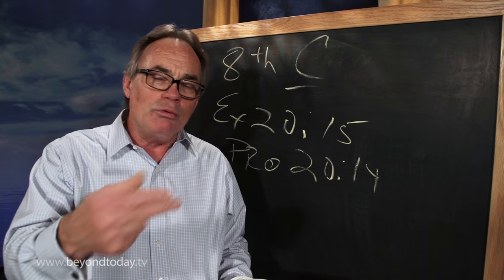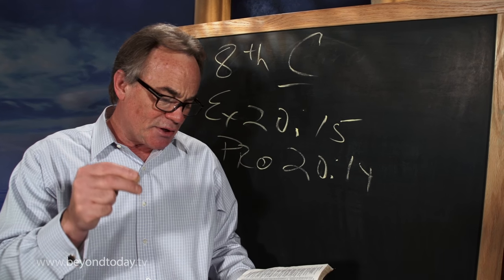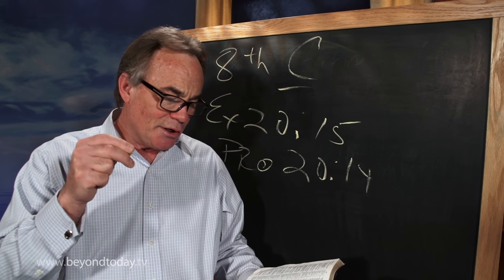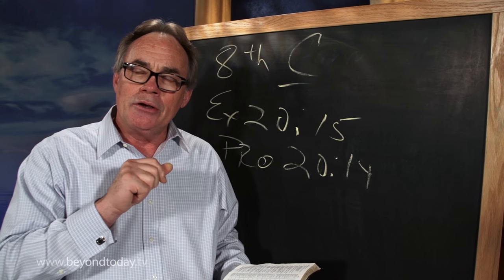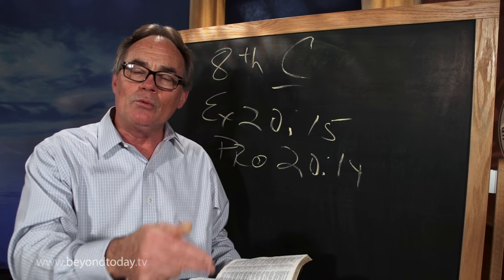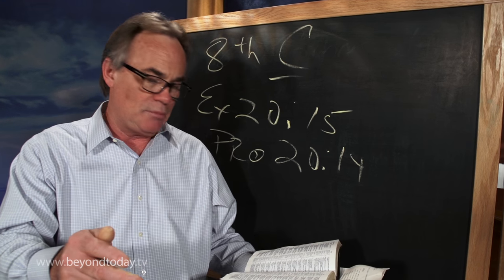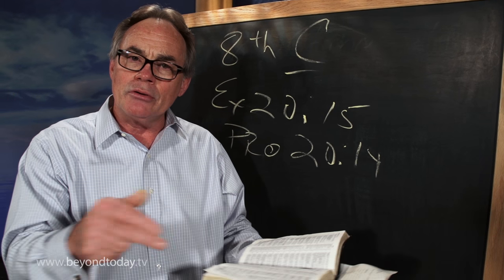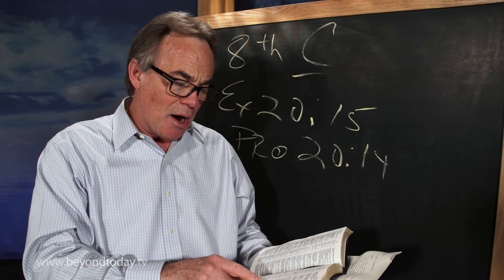Sometimes that, and this always works both ways. In verse 14, the Proverbs says, making a quote as if a person is talking. It's good for nothing, cries the buyer. In other words, you're negotiating, you're trying to work a deal with somebody over any type of item, whatever it might be. Something that's been used, something new, labor, goods or services. It's good for nothing, cries the buyer.